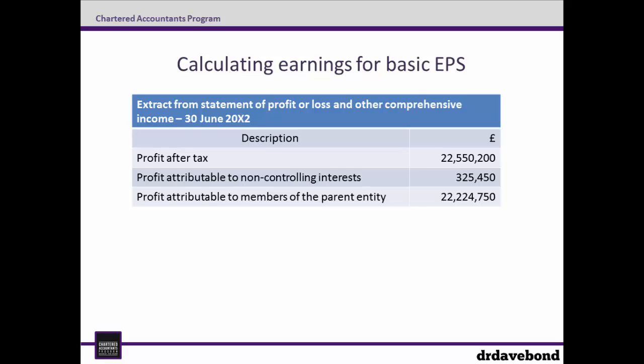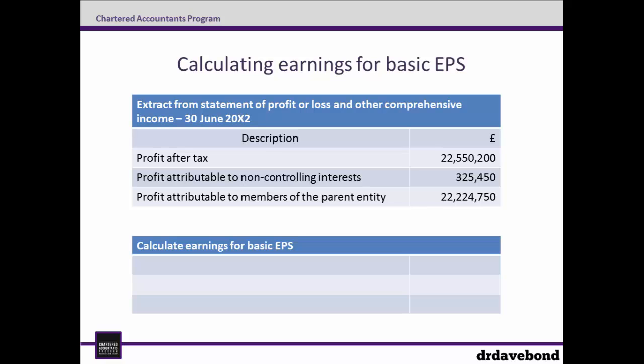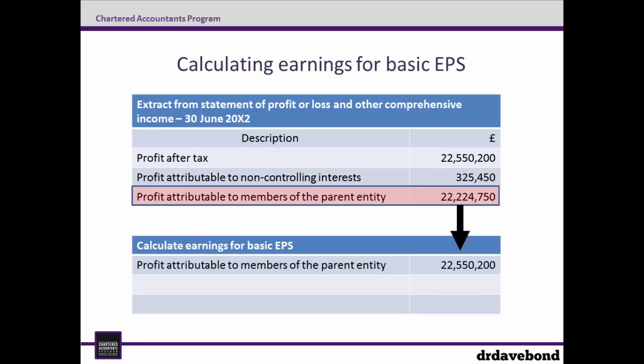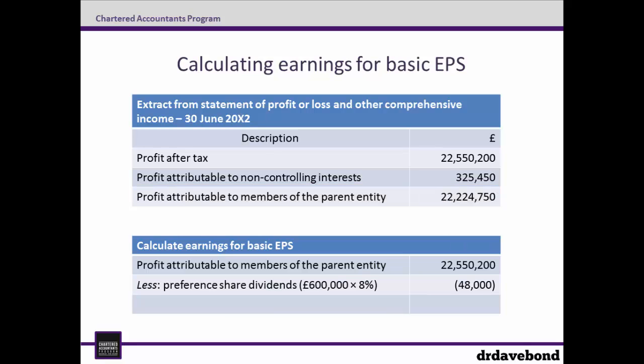So turning back to our example, for calculating earnings for the EPS calculation, we start with profit attributable to members of the parent entity. As the preference shares in this case were classified as equity, we deduct the dividends from this profit figure as required by paragraph 10. The dividends were 8% on 600,000, which equals £48,000. This leaves us with earnings of £22,176,750, which is the numerator value for the EPS calculation.